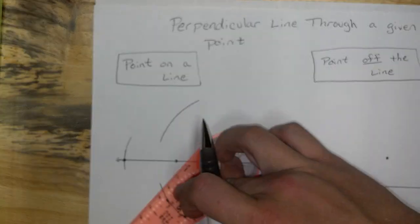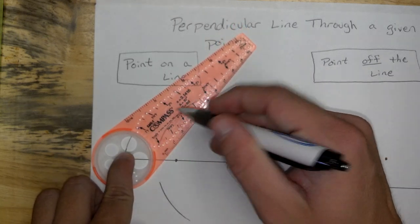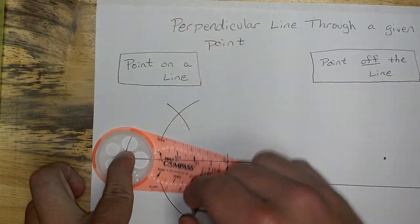Go to the other side, do the same thing. Right here, remember which hole you used, arc above, arc below.